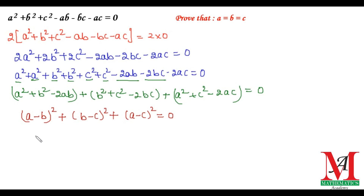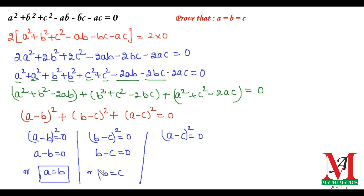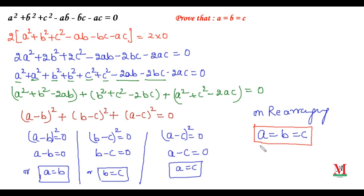Since all three terms are squares, they are positive, and their sum equals zero only when each term is individually zero. So a minus b equals zero, b minus c equals zero, and a minus c equals zero. Taking square roots: a equals b from the first, b equals c from the second, and a equals c from the third. Rearranging these three results, we get a equals b equals c, and that is the result which we required. Thank you friends.